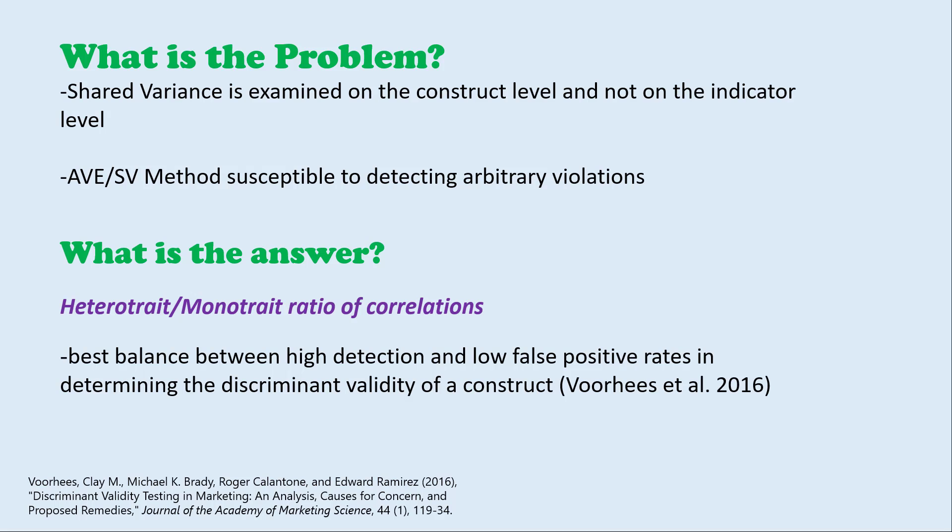Where's the problem with this? The problem is that the shared variance was really examining things at the construct level — when you're talking about that correlation, it was the correlation between constructs as a whole. It wasn't looking at individual indicators anymore. And the average variance extracted compared to shared variance method is also susceptible to detecting arbitrary violations. So what's the alternative? What's better?